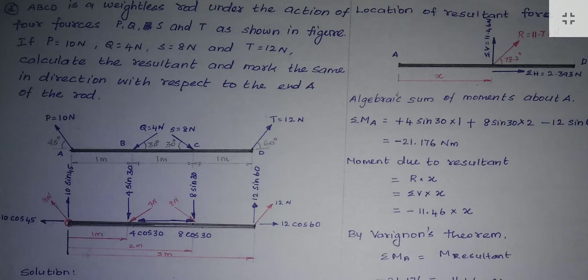This image is given in the question — look at it. Here, four forces act: P has a magnitude of 10 Newton acting at 45 degrees. The next two forces act at point B — one is 4 Newton, and the force at C is 8 Newton acting at 30 degrees with the horizontal. The fourth force T is 12 Newton at 60 degrees with the horizontal. The distances are 1 meter apart.